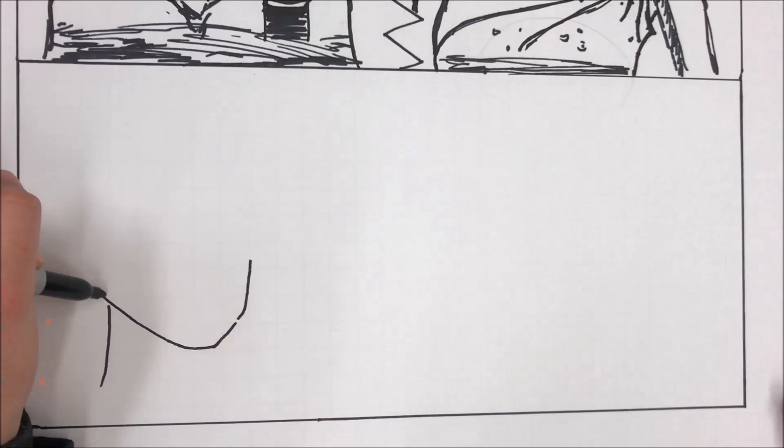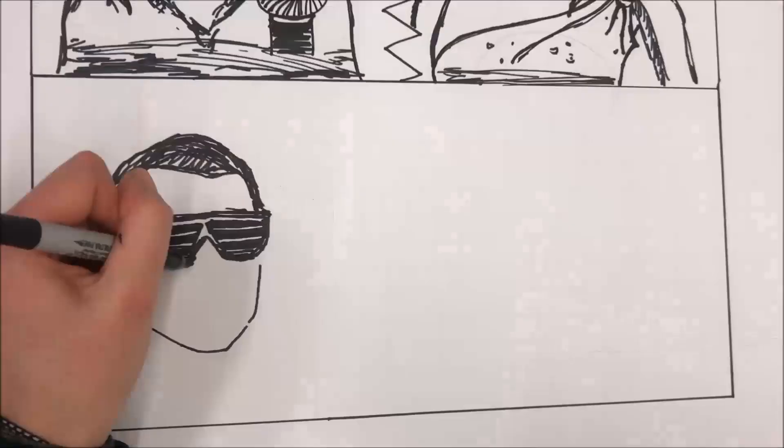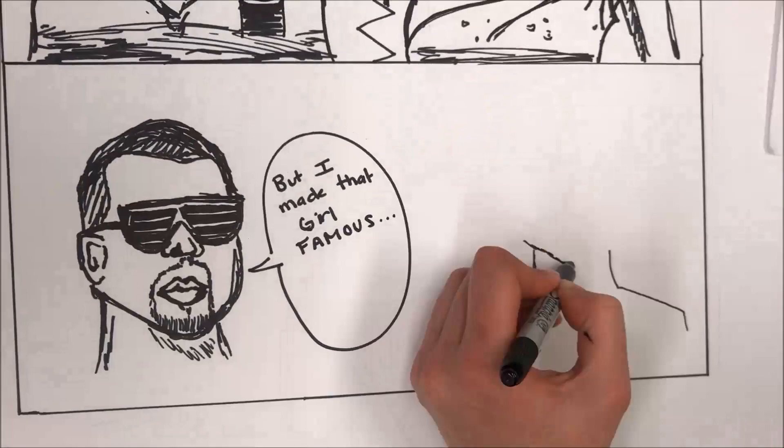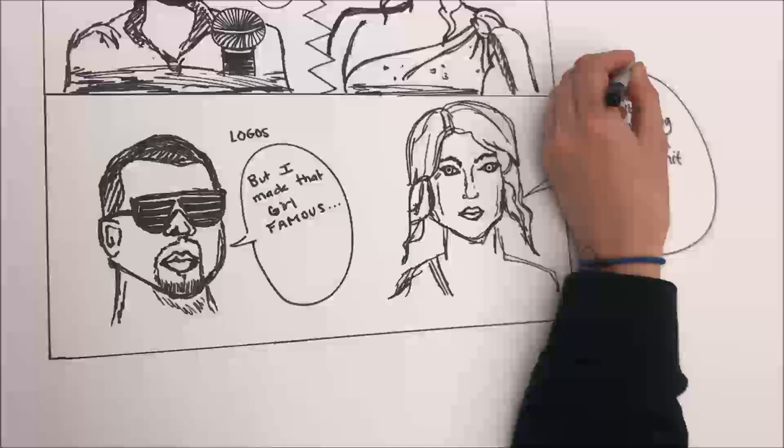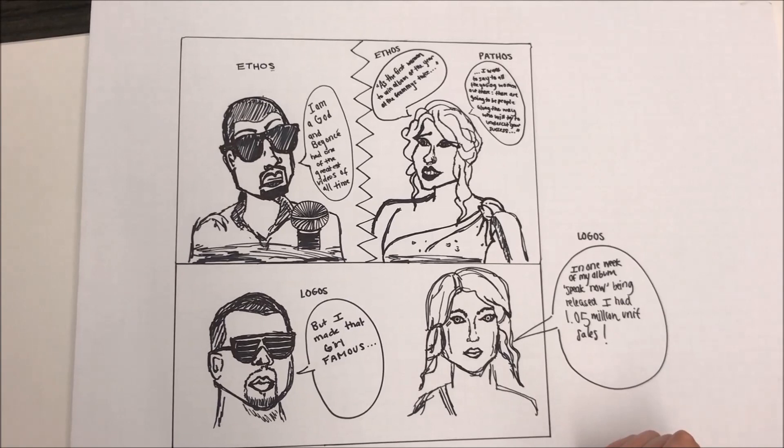In the third panel, Kanye West is again making a weak attempt at using logos stating, but I made that girl famous. Taylor refutes Kanye's statements using logos by stating a statistic about the number of albums sold in a week of release. Clearly, Taylor's appeal to ethos, pathos, and logos was more persuasive than Kanye's. Sorry, Kanye.